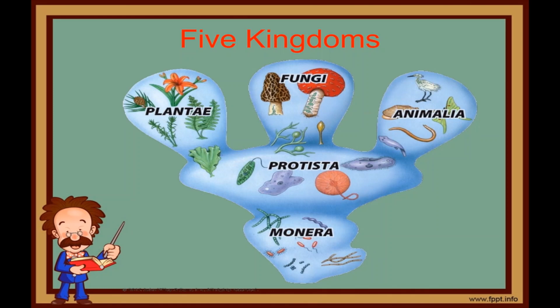Professor Whittaker classified all the organisms into Five Kingdoms: Monera, Protista, Plantae, Fungi, and Animalia. Let us see them one by one.